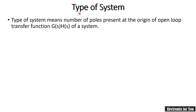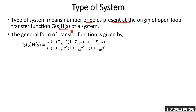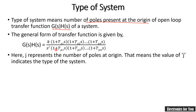Let's see what is the type of system. Type of system means the number of poles present at the origin of the open loop transfer function G multiplied by H of the system. In the general form of the open loop transfer function G·H, s raised to power j indicates the number of poles at the origin, and therefore j indicates the type of the system.